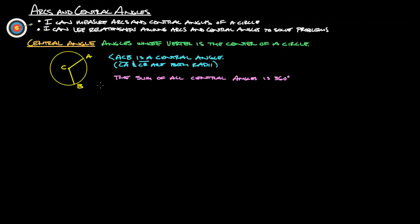So first things first, central angle. Central angles are angles whose vertex is in the center of a circle. So angle ACB is a central angle. CA and CB in this case just happen to both be radii. The sum of all central angles is 360 degrees, just like a full circle.